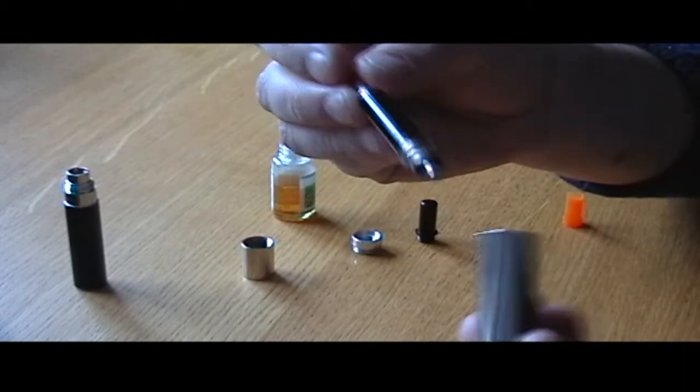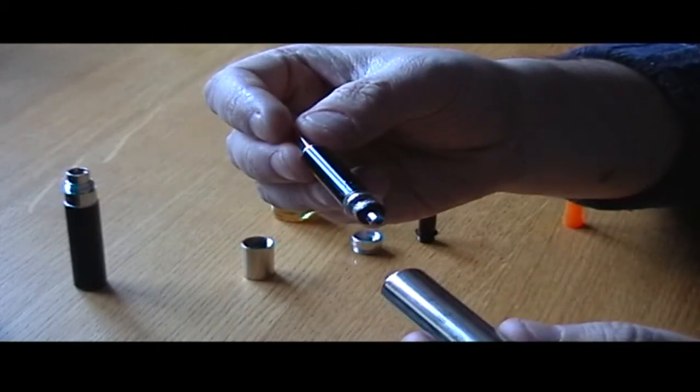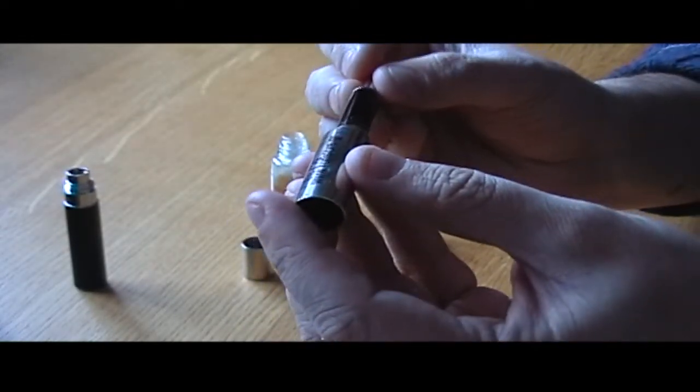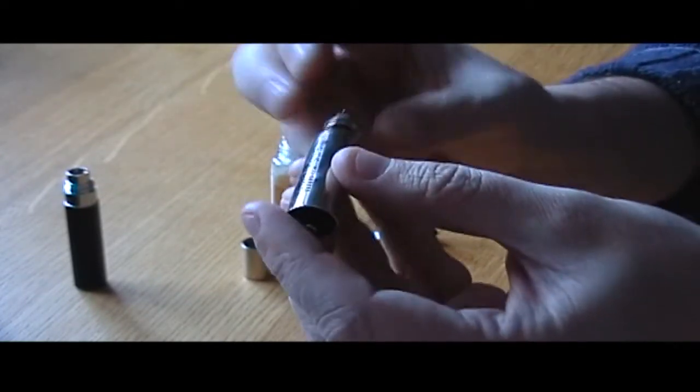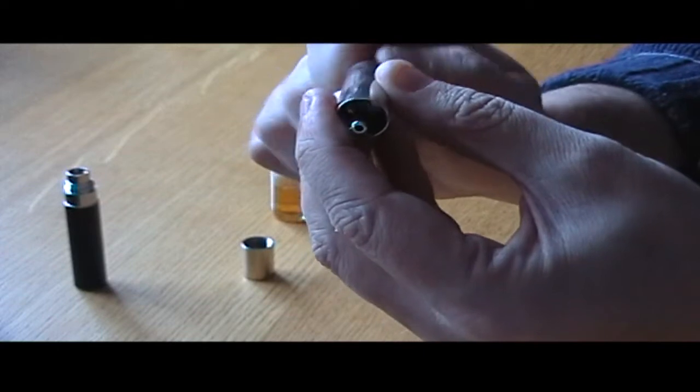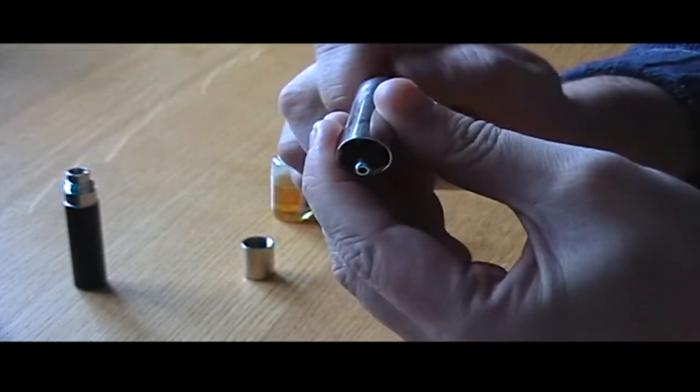The assembled atomizer now screws into the bottom of the main juice chamber. That wants to be pretty firmly put together, tight enough so that juice won't escape.